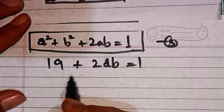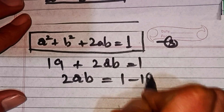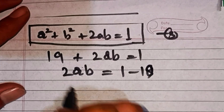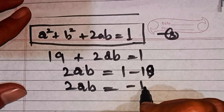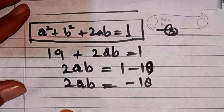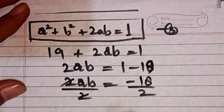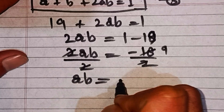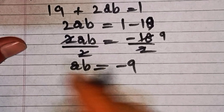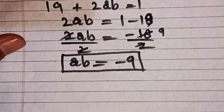Moving 19 to the right hand side: 2ab = 1 - 19 = -18. Dividing both sides by 2, the 2s cancel and we get ab = -9. So this is the final answer. Thanks for watching this video, keep supporting us and we'll see you in the next video. Till then, take care.